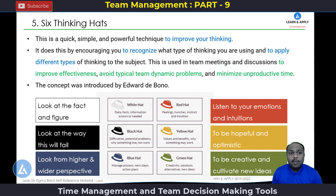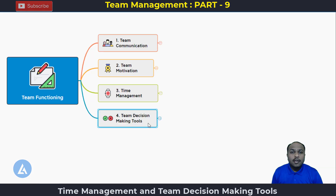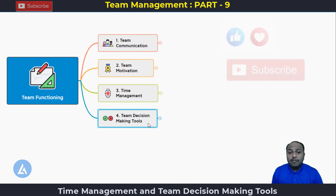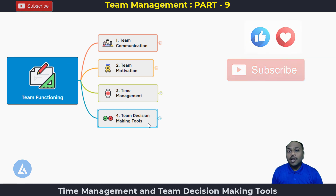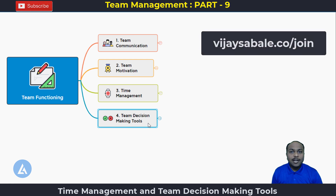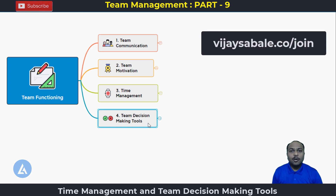These are the five important team decision making tools that can be used by the team to take decisions in difficult situations. With the learning of these tools, we have also completed the topic of team functioning. If you found this information useful, please do not forget to like, comment, and subscribe. If you want to learn Lean Six Sigma and Minitab most effectively and practically, then please visit vijasavet.com.